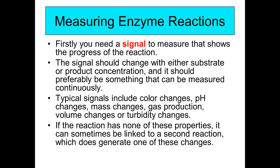If the reaction has none of these properties, people link it to a secondary reaction. For example, pH changes are often hooked up with a color indicator — the initial enzyme reaction changes the pH of the solution, and then the changed pH is reported by a colored reporter molecule.